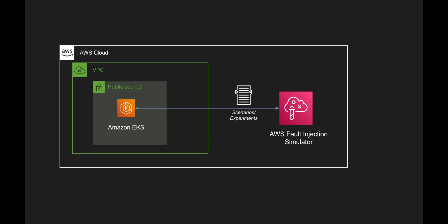We are going to run experiments on EKS. Right now there is one experiment specifically for EKS, which is to terminate a node group — these are like terminating EC2 instances. I've created an EKS cluster with two nodes. In order to run FIS experiments on EKS, we need to provide some specific roles so that FIS can terminate instances within your cluster. We are going to leverage STS to assume roles so that FIS can assume the role and connect to EC2 instances whenever required.